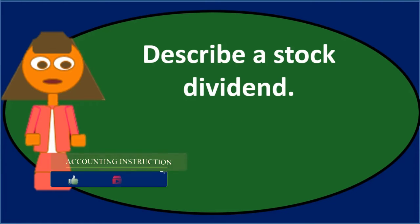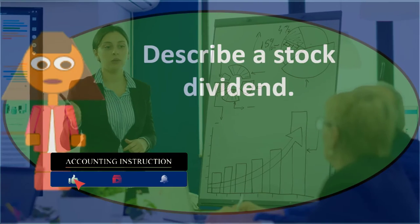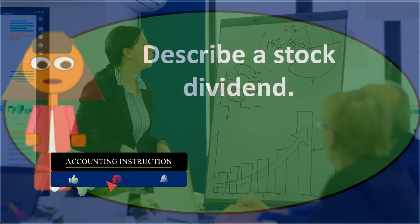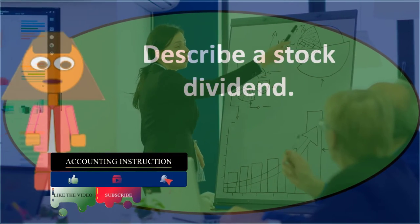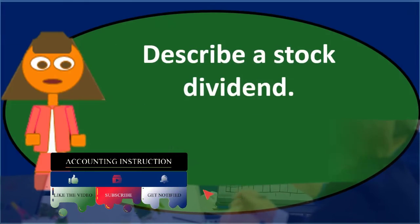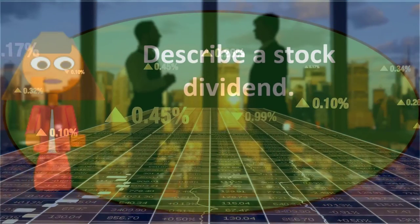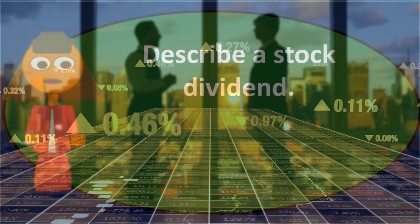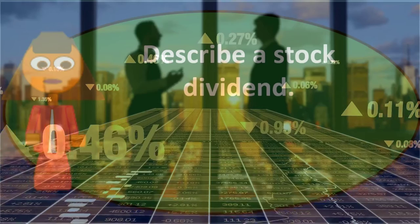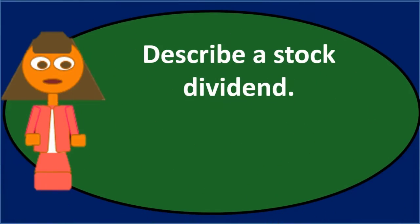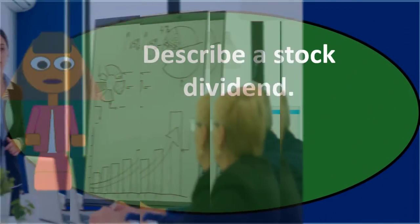What a corporation can do is give a stock dividend — taking corporate stock that hasn't yet been distributed and giving it to the current stockholders. People who already own an interest in the company through stock will receive additional shares, giving them a greater equity interest in the company.